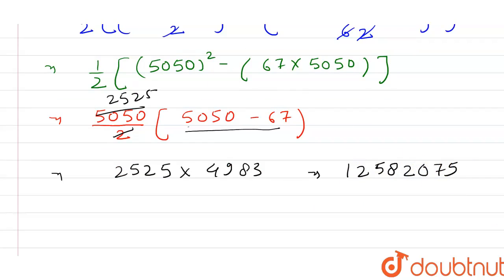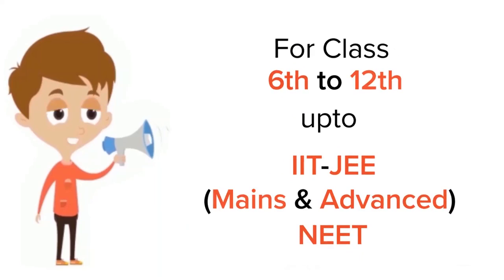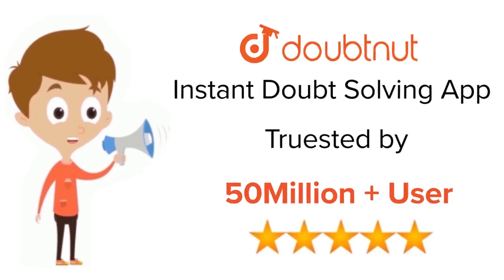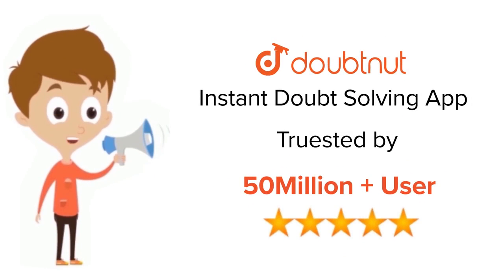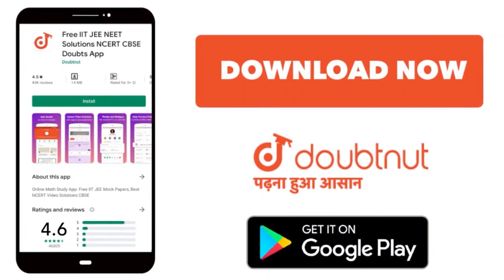So guys, 12582075 is the coefficient of x raised to power 98. I hope you guys liked it, thank you. For Class 6 to 12, IIT JEE and NEET level, trusted by more than 5 crore students — download the Doubtnut app today.